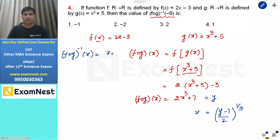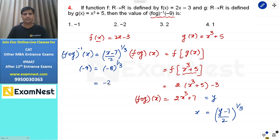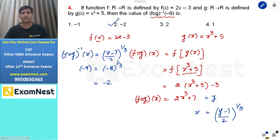f∘g inverse function: जहाँ y लिखा है, वहाँ x लिख देंगे। तो (f∘g)⁻¹(x) = ((x-7)/2)^(1/3)। Question में (f∘g)⁻¹(-9) की value: x = -9 put करने पर (-9-7)/2 = -16/2 = -8। (-8)^(1/3) = -2। Second option इस question का answer।